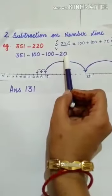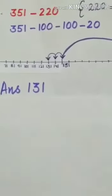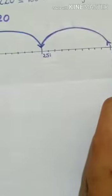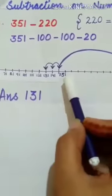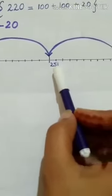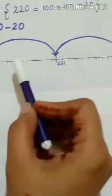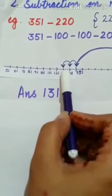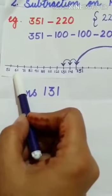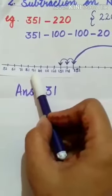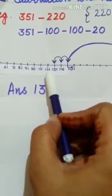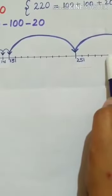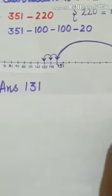From 351 we will first minus 100, then again 100, and then again 20. Now draw a number line from 51 to 351. After that, divide 51 to 151, 151 to 251, and 251 to 351 in 10 equal parts, so that each division shows the difference of 10.